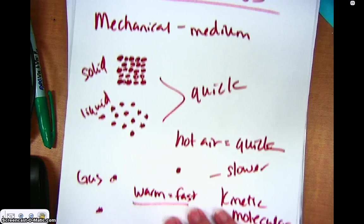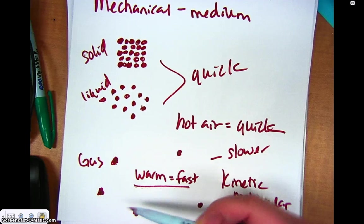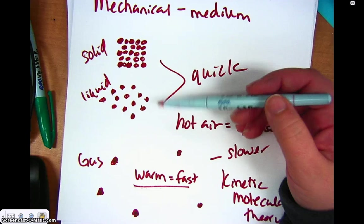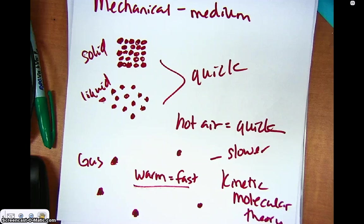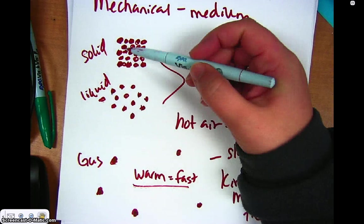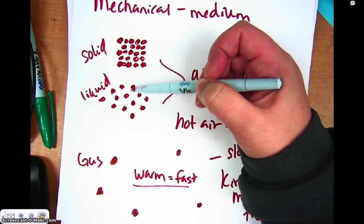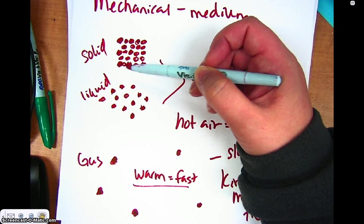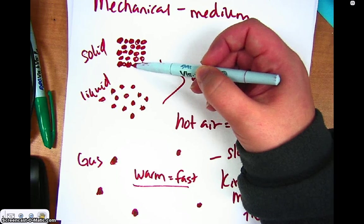Now gases have particles that are very far apart from one another. When we talk about the transmission of energy between these particles, it's essentially like a collision, an elastic collision like we learned about in our energy unit. If you have solid particles or liquid particles, the particles are very close together, and therefore the collision is going to happen very quickly because they don't have very far to travel in order to come in contact with the next particle.